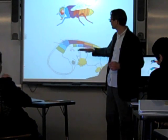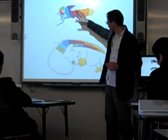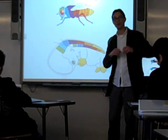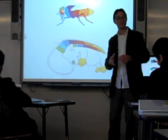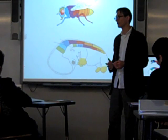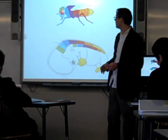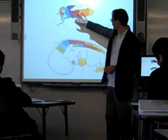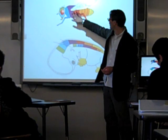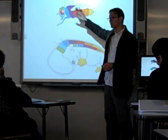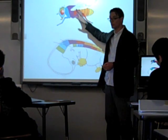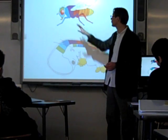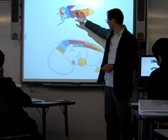Instead of making wings, they make some other parts. They use the same domino to start off the cascade; it just goes in a slightly different direction. We've seen in flies that a particular mutation in one of these Hox proteins causes an extra set of wings.